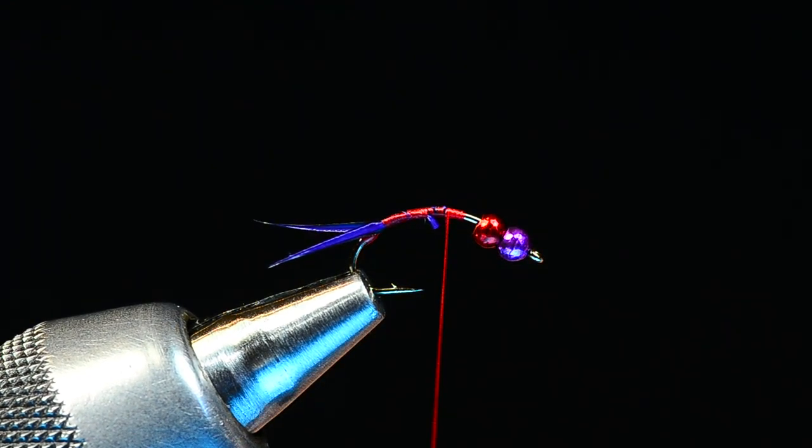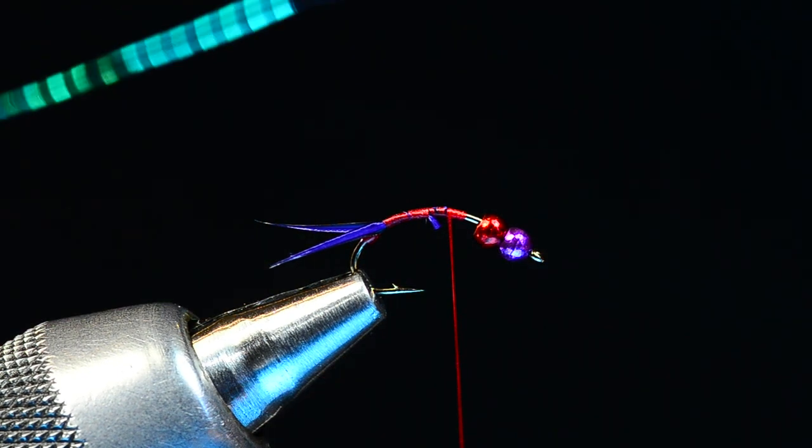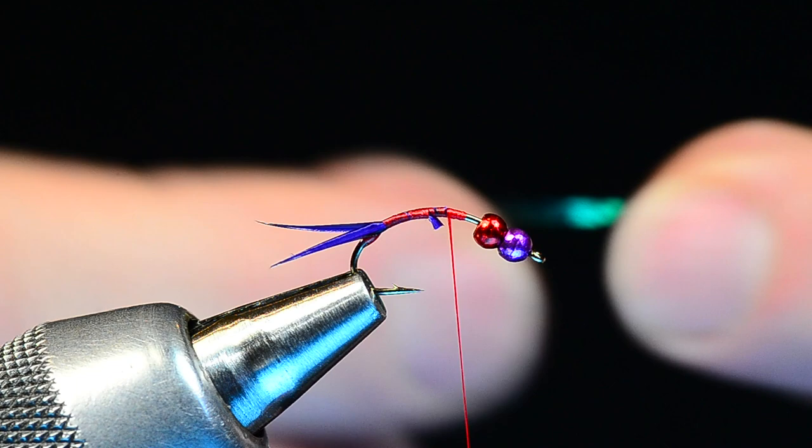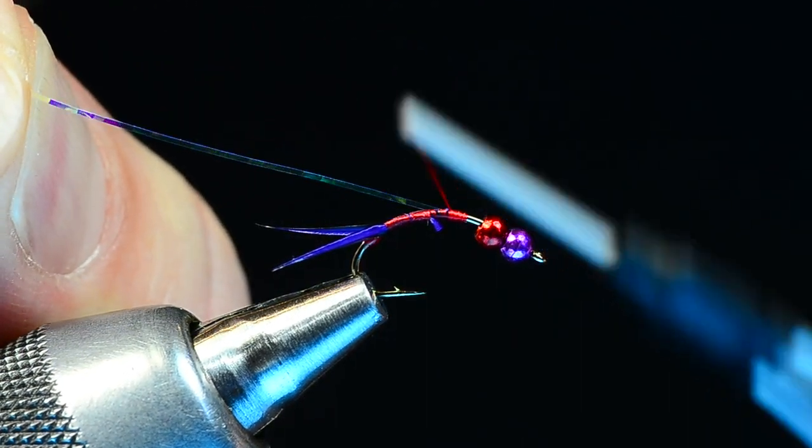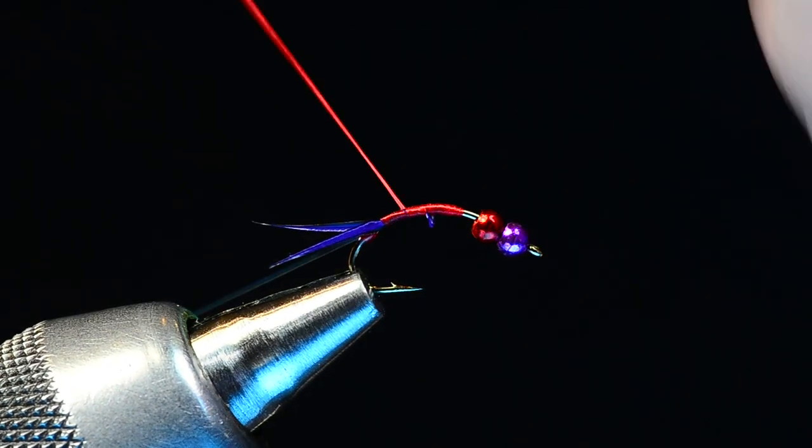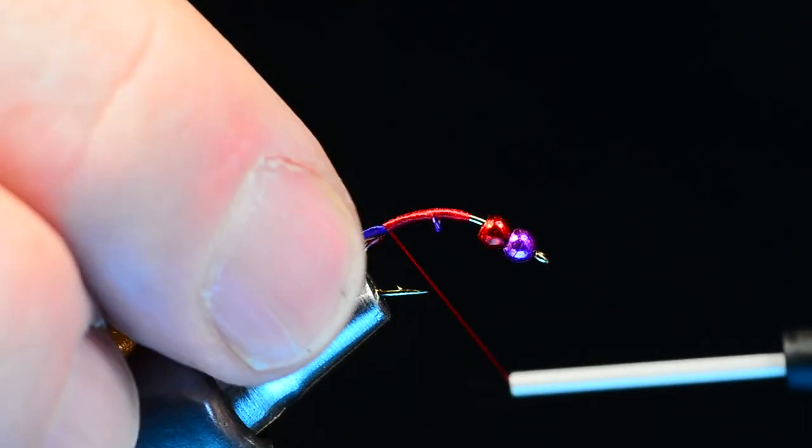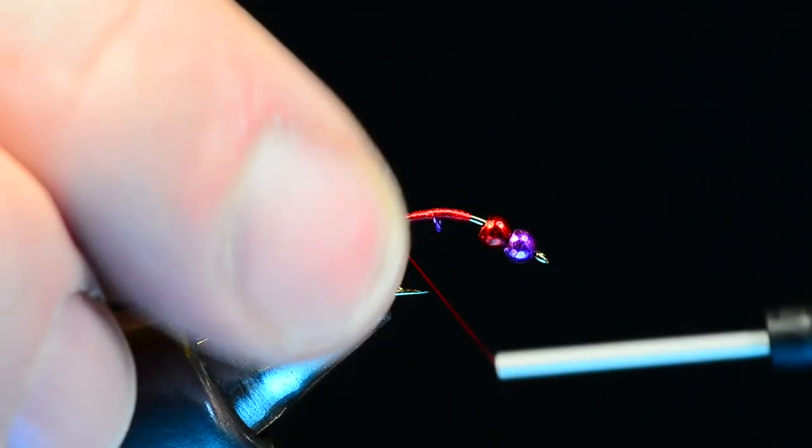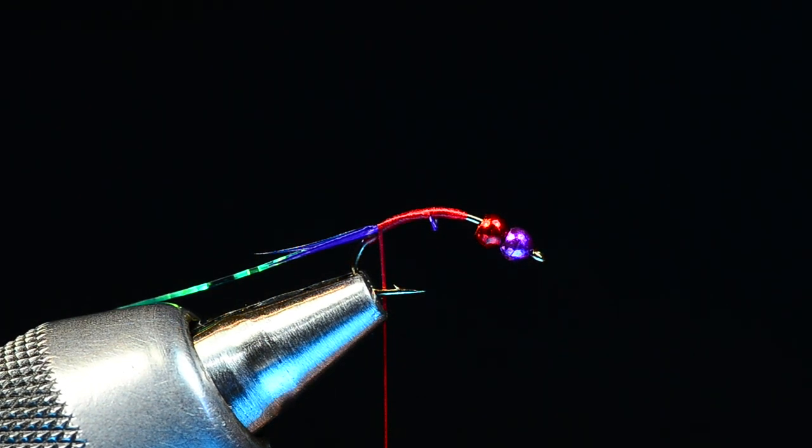And I'll come forward over those butt ends to just short of that red bead and I'll trim the butts off. Now I'm going to take a piece of 1/100th Mirage lateral scale and I'm going to tie this in just up here behind the bead. I'll catch it, draw it down to length, and wrap back over it all the way back to the base of the tail. I'm going to butt those tails right up to that thread nub. And I'll take that piece of flash and I'll just clip it back here in my material spring so it's out of the way for the time being.